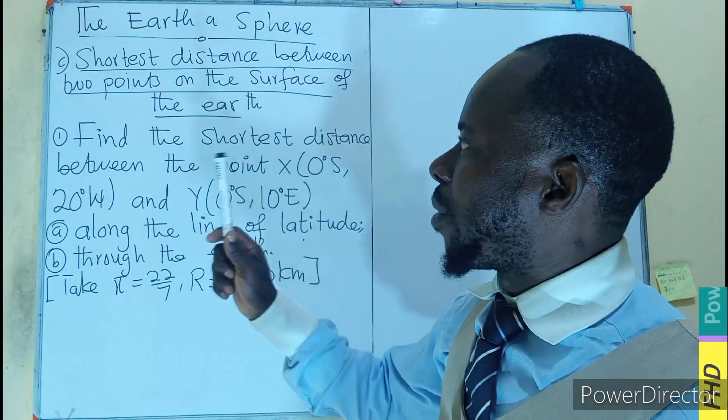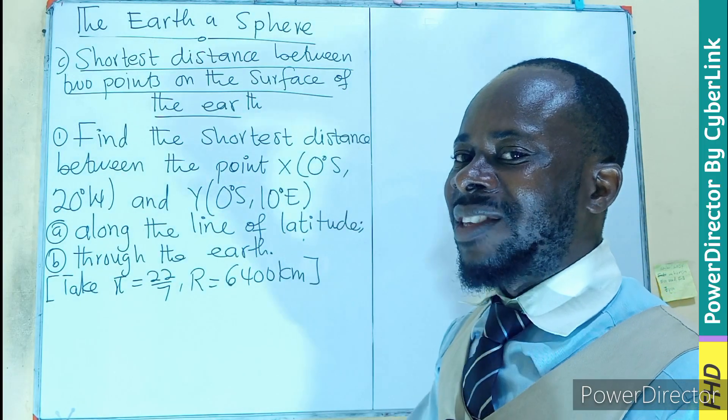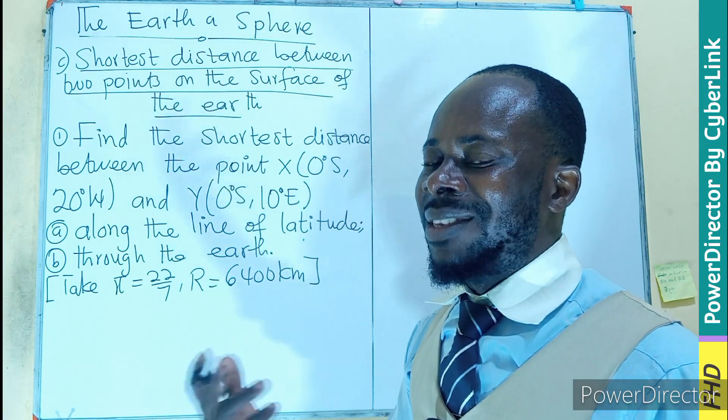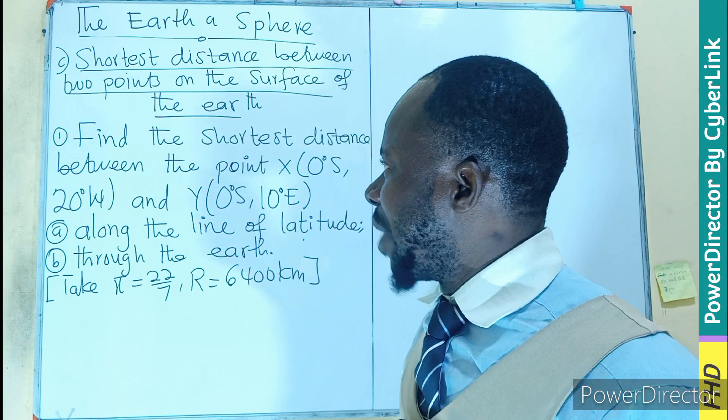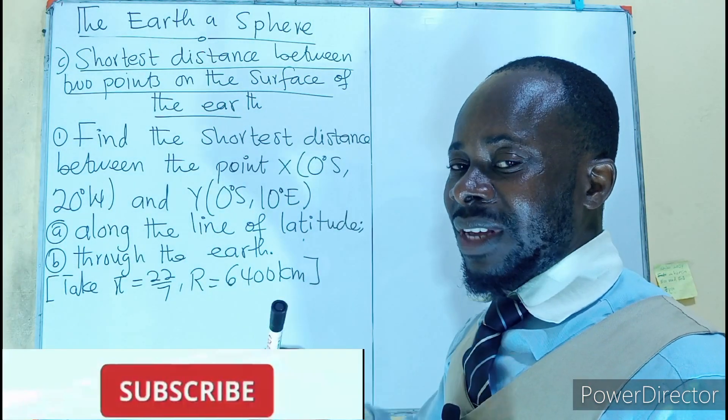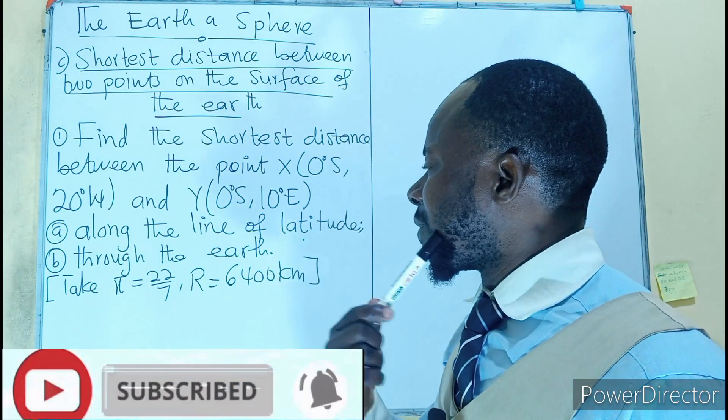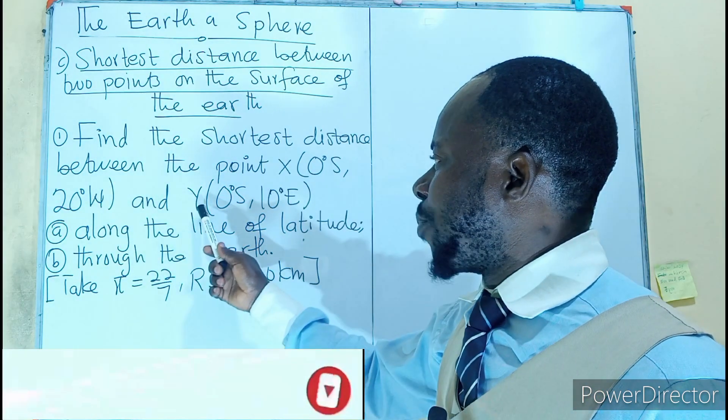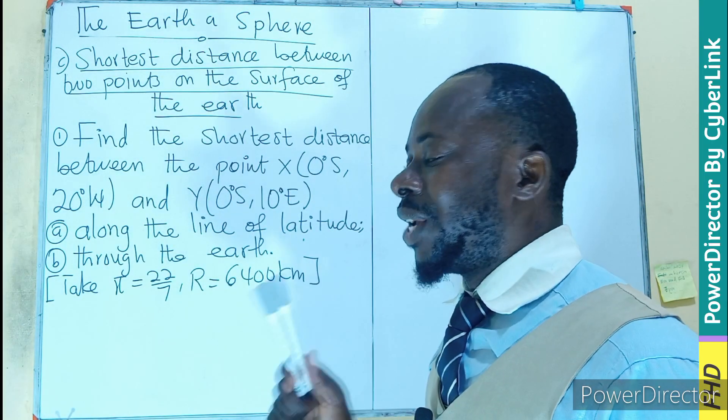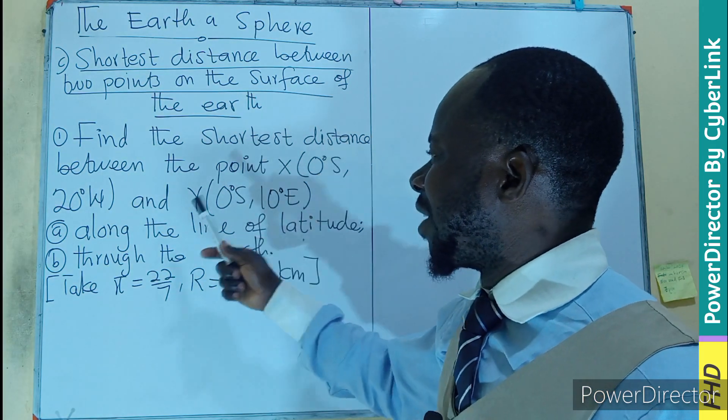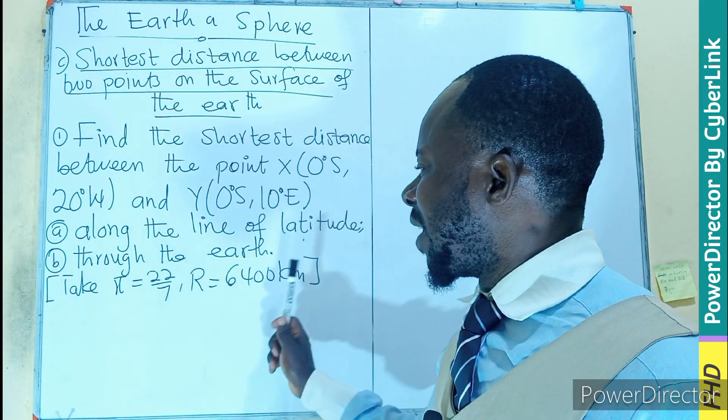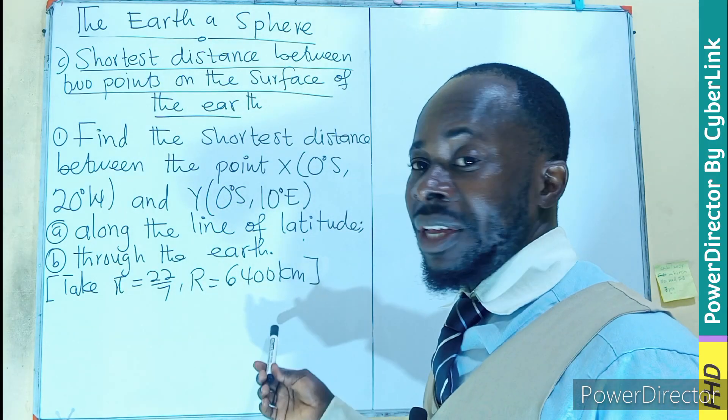Here we are concerned about the shortest distance between two points on the surface of the Earth. Remember the end part of episode two, we explained what the distance could be on the surface of the Earth. So now we have to find the shortest distance between point X, which is on the coordinates 0 degrees latitude, 20 degrees west, and point Y, which is also on latitude 0 degrees south and longitude 10 degrees east. So you have to find the shortest distance along the line of latitude and also through the Earth, taking pi to be 22/7 and the radius of the Earth to be 6400 km.